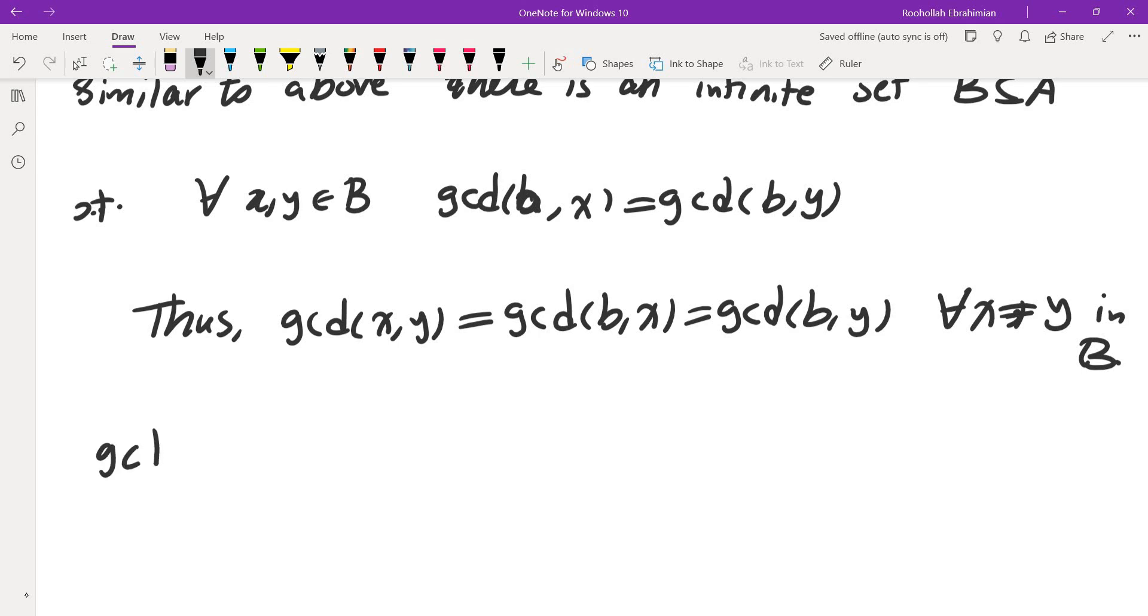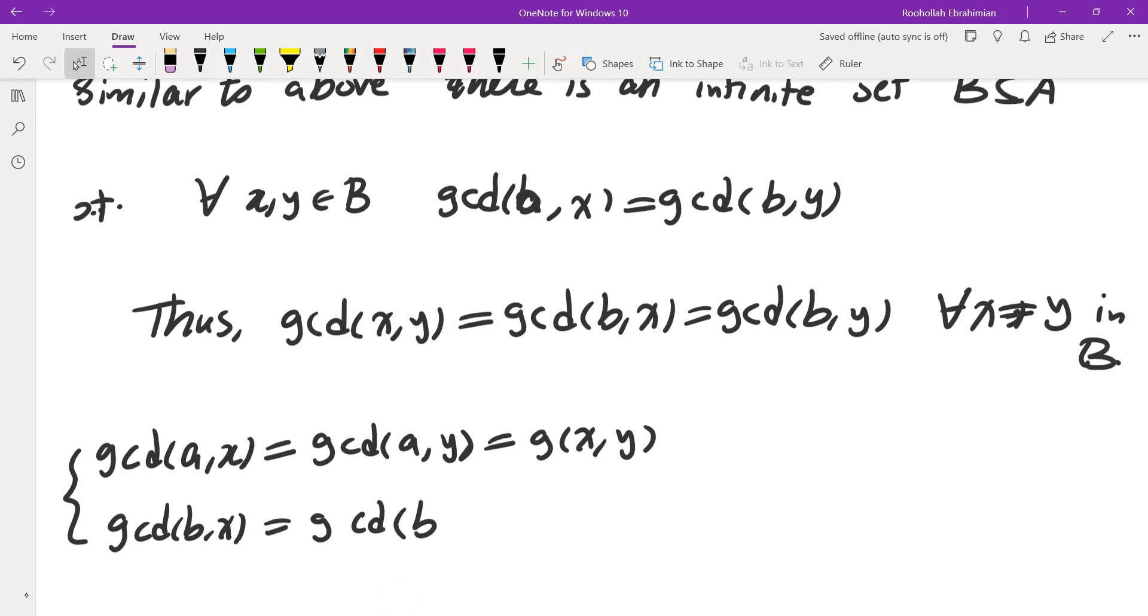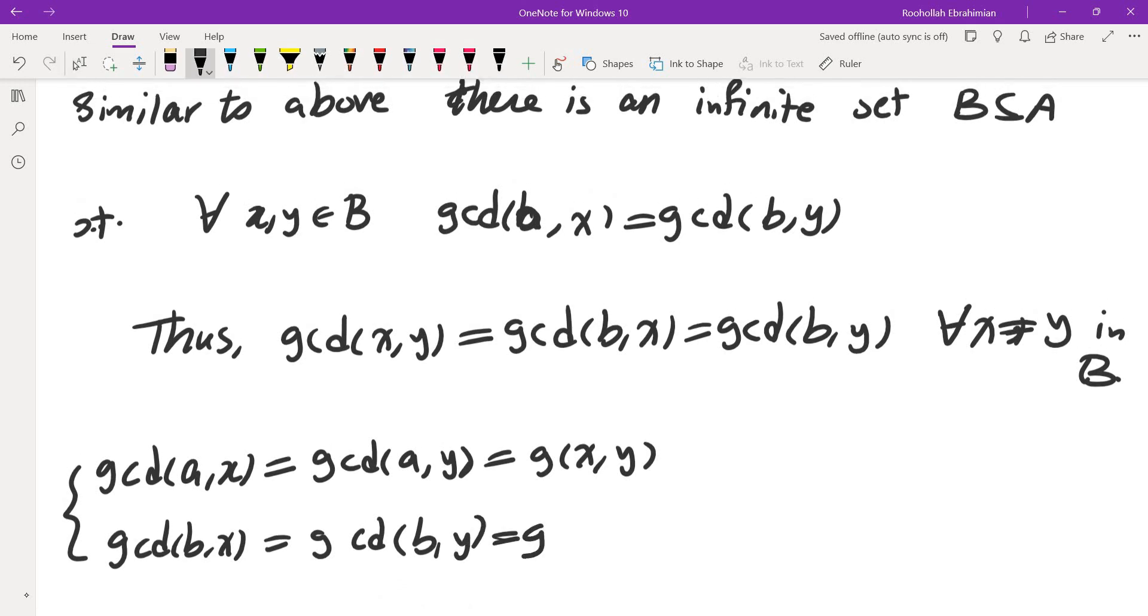So now let's see what happened. So far we have gcd(A,X) is equal to gcd(A,Y) is equal to gcd(X,Y). We also know gcd(B,X) is the same as gcd(B,Y) and that's the same thing as gcd(X,Y).